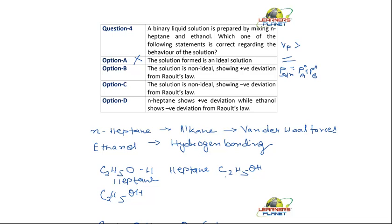The solution is not ideal. The solution is not ideal showing positive deviation from Raoult's law. This is correct. Here the vapor pressure of the solution is far more than the vapor pressure of the solvents. So this is right option.